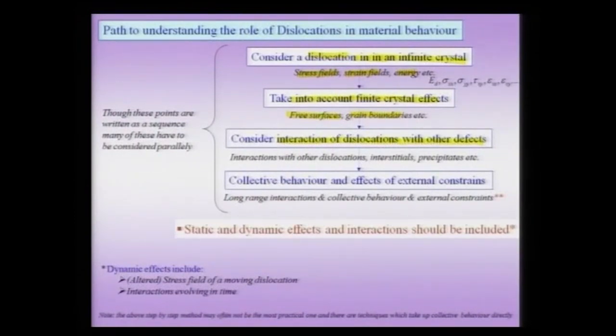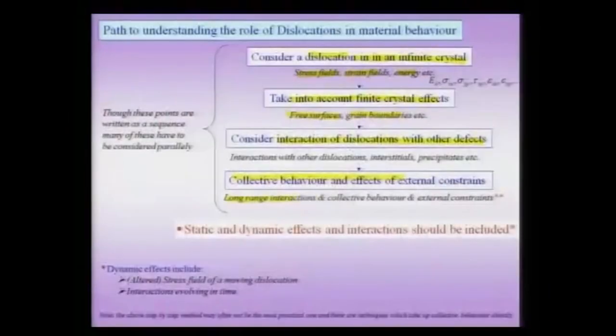This is an important topic, and then finally the goal is to understand the collective behavior of dislocations. This is a very challenging task in materials science — trying to understand how not a single dislocation, but thousands or even millions of them, are moving together, interacting with each other, with free surfaces, and with precipitates. All this evolution is taking place in time and under external constraints such as displacement boundary conditions, imposed stresses, or forces — the simplest case being a uniaxial tension test.